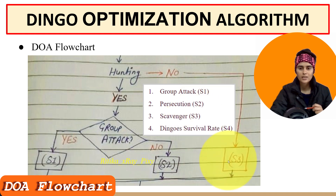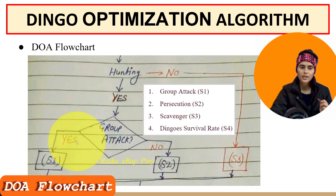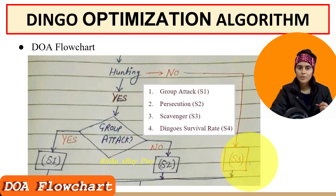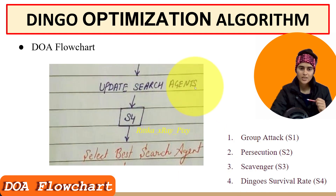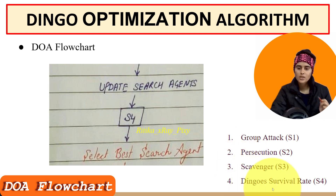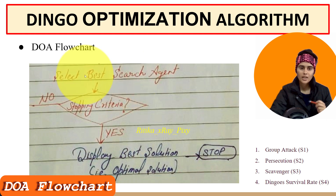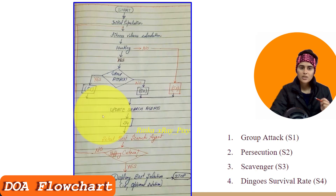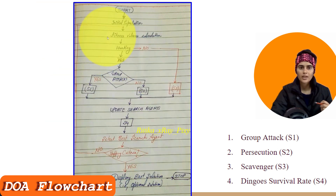If they are hunting, we check whether they are doing group hunting or persecution. If group hunting, we apply strategy one. If not group hunting, we apply individual hunt (strategy two). If not hunting at all, they are randomly walking in the territory and we apply strategy three. After that we update search agents, apply strategy four, check the dingo survival rate, select the best search agent, and check the stopping condition. If met, we display the optimal solution; otherwise we repeat the loop.